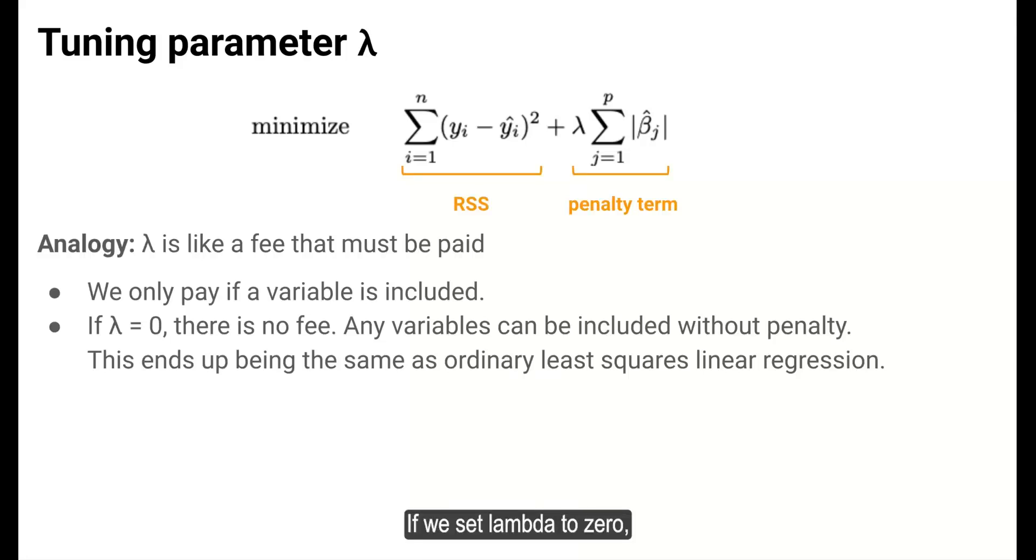If we set lambda to zero, we're saying that we will impose no fee for having variables in the model. Any variables can be included without penalty. In this case, LASSO ends up being the same as ordinary least squares regression because the penalty term goes away.